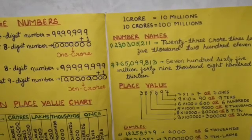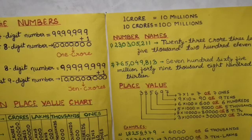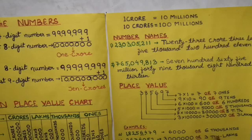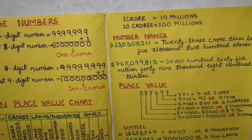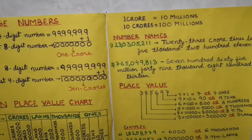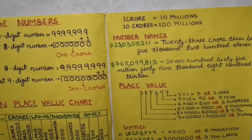Now two examples: First, find the place value of the underlined digit in 1,82,56,479 where 6 is underlined. Count the position from the right: ones, tens, hundreds, thousands — so the position of 6 is thousands and its place value is 6,000. Second example: in 36,74,052, find the place value of 3. Count the position — 3 is at the ten lakhs place, so its place value is 30,00,000, i.e., 3 ten lakhs.